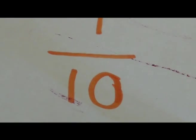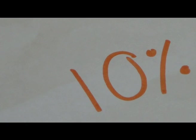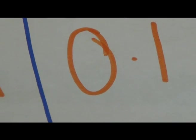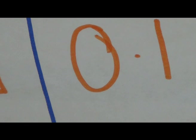One tenth is equal to 10%. That is because 10 times 10 is 100 and that equals a whole one. So the decimal will be 0.1 because 0.1 added 9 times equals 1.0, which is a whole one.